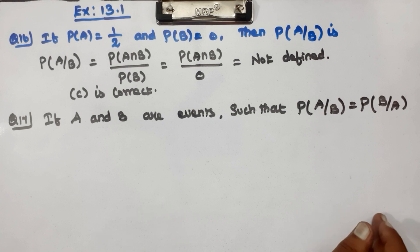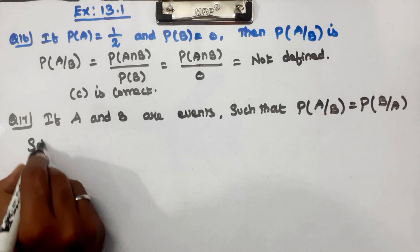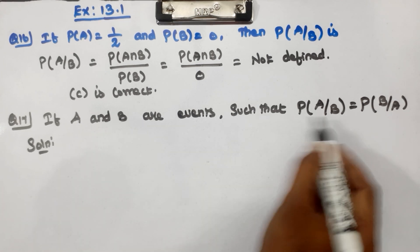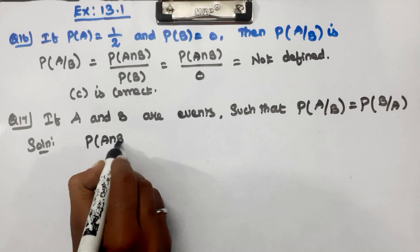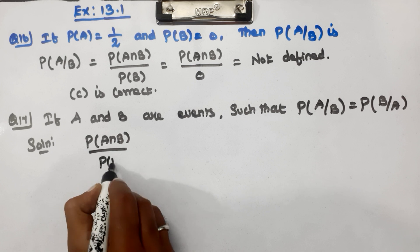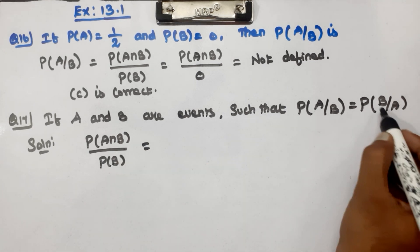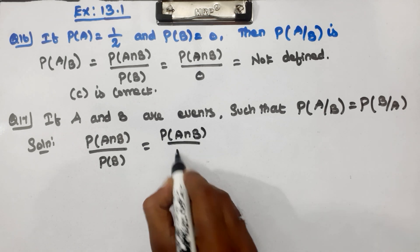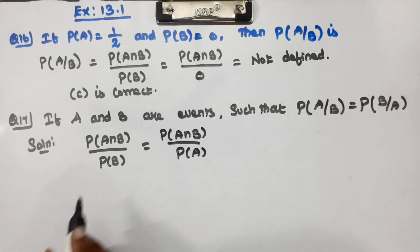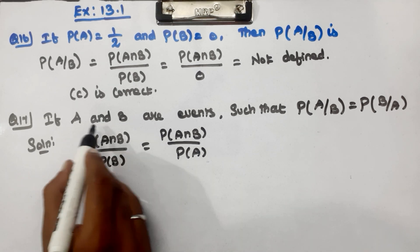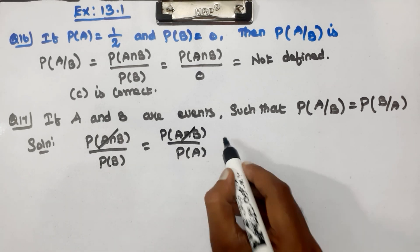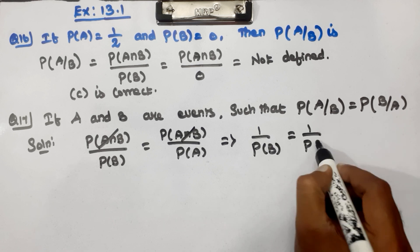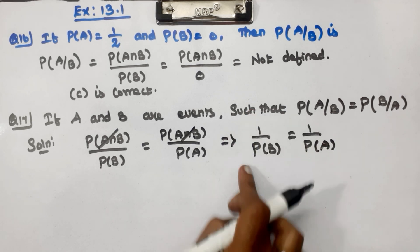Solution: Given P(A|B) equals P(B|A). We know P(A|B) equals P(A intersection B) divided by P(B), and this equals P(B|A) which is P(A intersection B) divided by P(A). Cross multiplying and canceling, we get P(A) equals P(B).